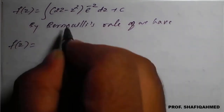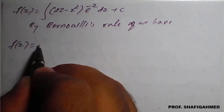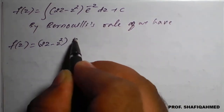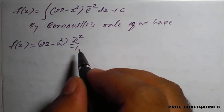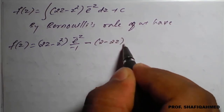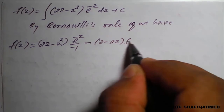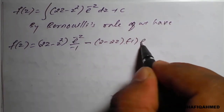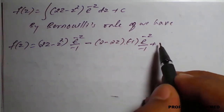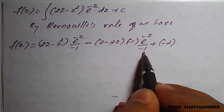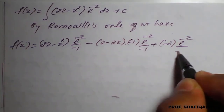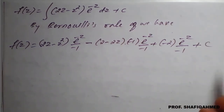Applying Bernoulli's rule with u = (2z − z²): keep (2z − z²) as is, integration of e^(−z) is e^(−z)/(−1). Then minus: differentiation of (2z − z²) is (2 − 2z), carry −1, integration of e^(−z) is e^(−z)/(−1). Then plus: differentiation of (2 − 2z) is −2, and −1 × −1 carries; integrate e^(−z) to get e^(−z)/(−1). Differentiation of −2 is 0, so stop and close with + c.